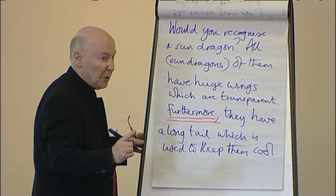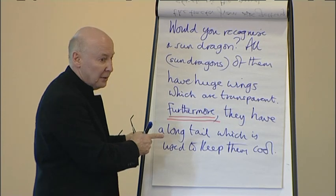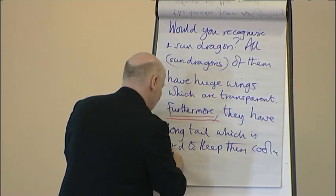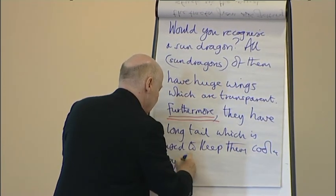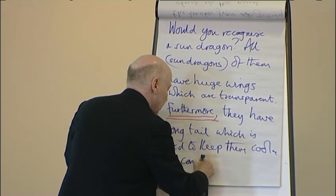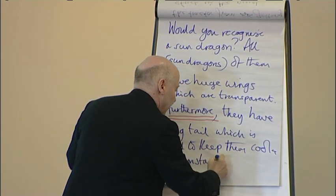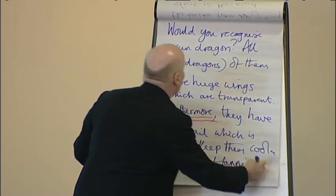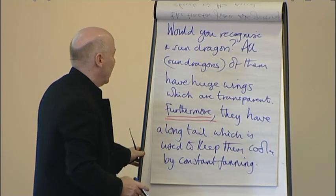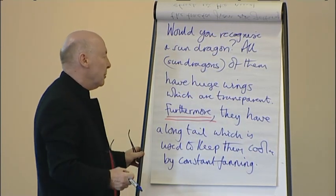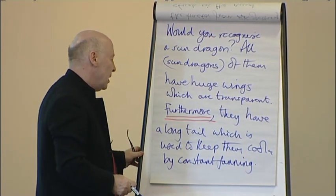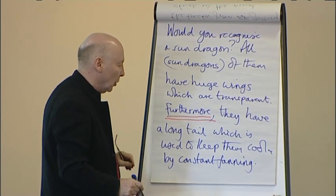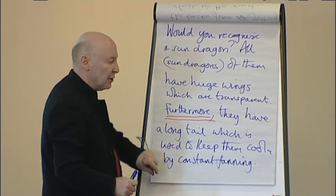Do I want to put the fanning bit in? How could I get that in? Get rid of the full stop — by constant fanning. Let's re-read it to make sure it flows. Would you recognise a sun dragon? All of them have huge wings which are transparent. Furthermore, they have a long tail which is used to keep them cool by constant fanning.